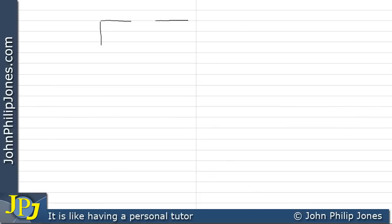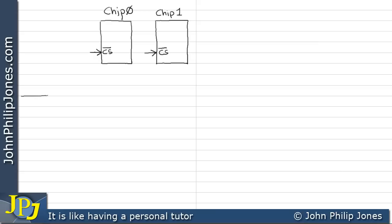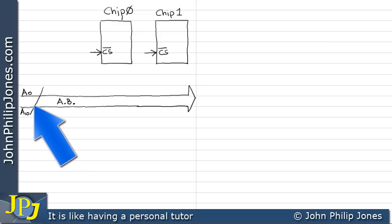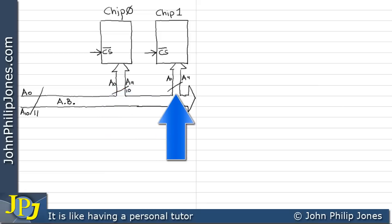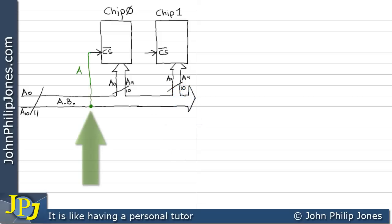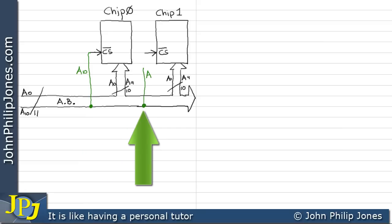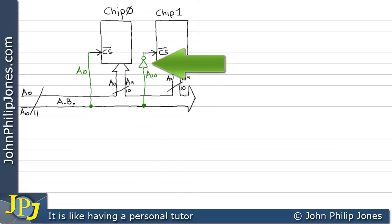I'll draw a schematic diagram of the two memory chips — chip 0 and chip 1 — with a chip select going to each, responsible for switching them on. The address bus has 11 lines going from A0 through to A10. To each chip we take 10 of the address lines — A0 to A9. A10, the 11th line, goes to both chips, but it goes through a NOT gate to the chip select.